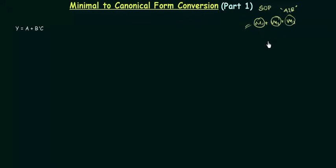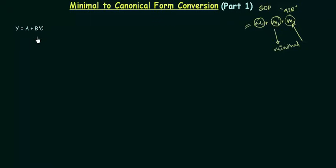We are going to do the reverse of it. Right now we know how to go canonical to minimal, but we don't know how to convert minimal to canonical. So we are going from bottom to top in this presentation. I have one example: Y is equal to A or B complement and C. We are going to obtain the canonical form from this minimal form. This is minimal because in min term 1 we don't have B and C, and in min term 2 we don't have A.